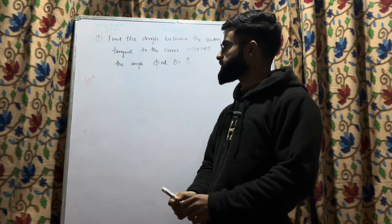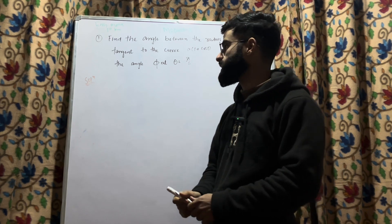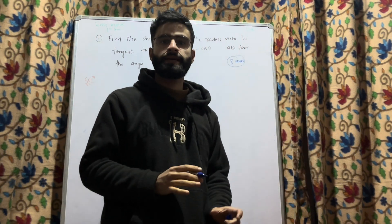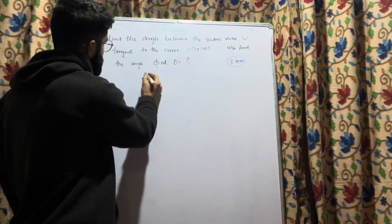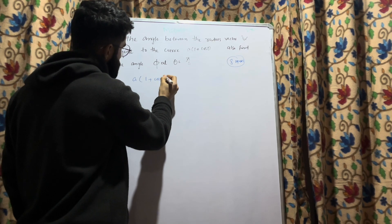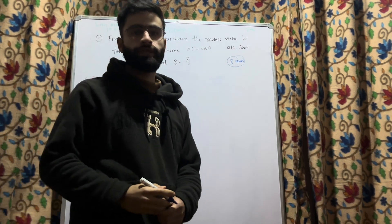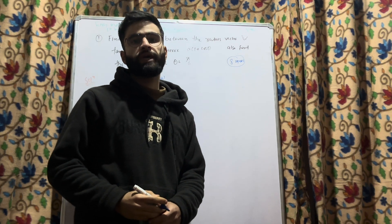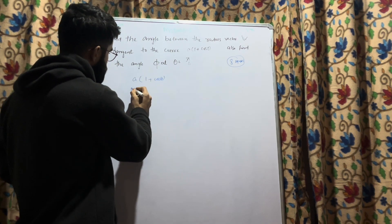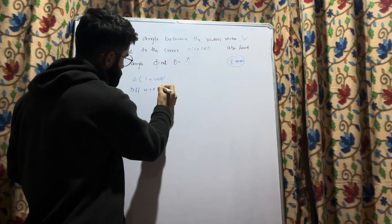The procedure is the same, but we have to remember some trigonometric formulas. Let us solve this question by the same procedure. So we have r = A(1 + cosθ). The procedure for solving these types of problems: first, differentiate the equation, then divide both sides by R. Let us first differentiate the above equation with respect to θ.